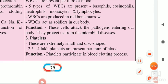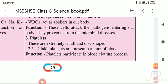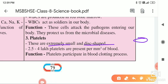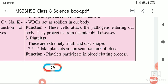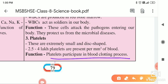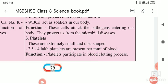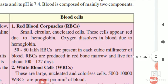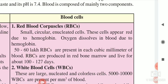Next are the platelets. Platelets are extremely small, disc-shaped — like a CD or disc. 2.5 to 4 lakhs platelets are present in 1 cubic millimetre of blood. Their function is to participate in the blood clotting process, which is a very important process. Sometimes in an accident the person gets a deep injury, and at that time blood clots form so that the flow of blood can stop.